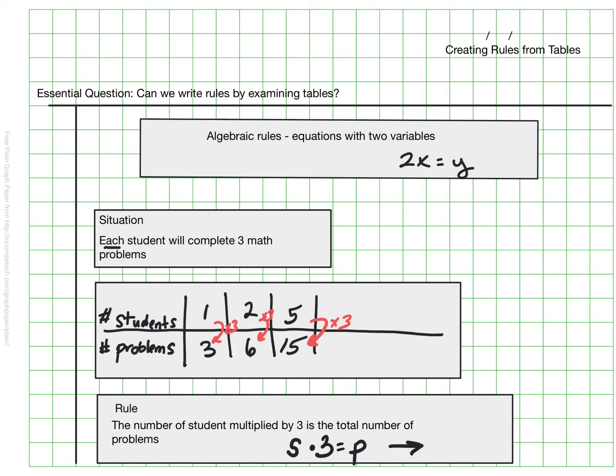But you'll more often see me write that this way. Three times the number of students is the number of problems. So we saw our situation, made a table, and then kind of used that to create our rule. But we can even write our rules directly from a table.